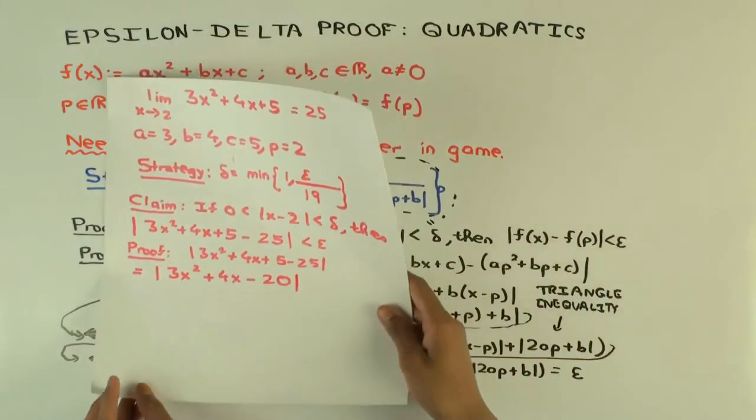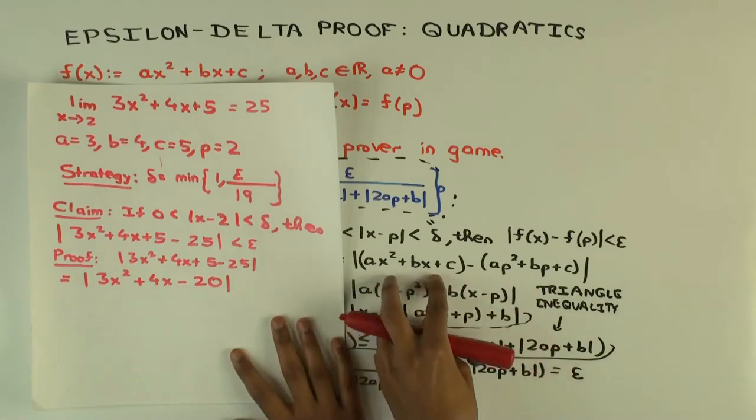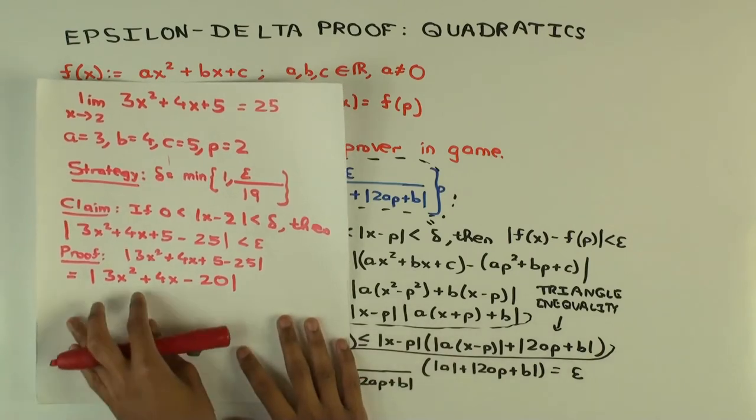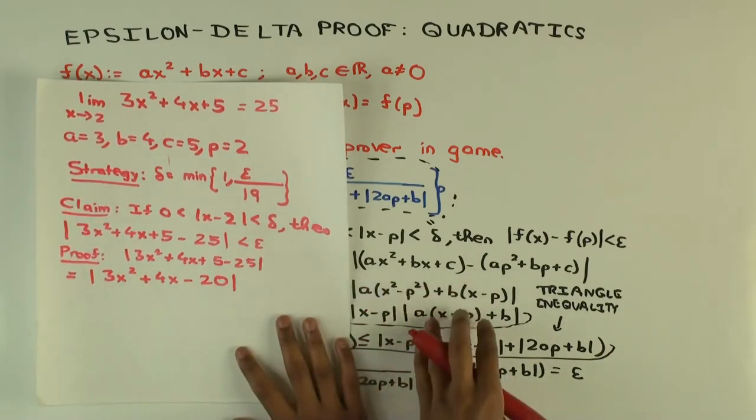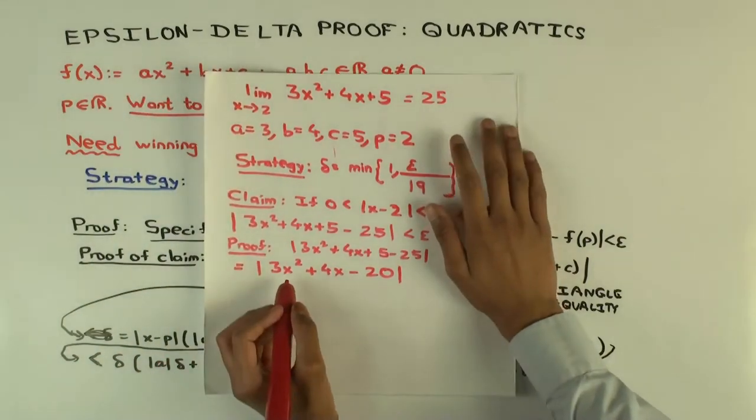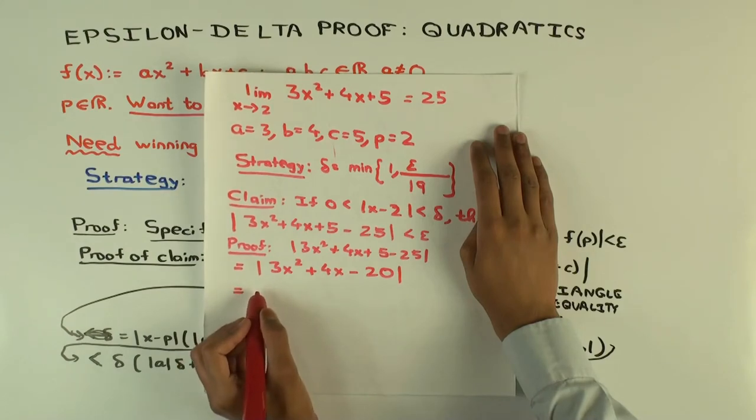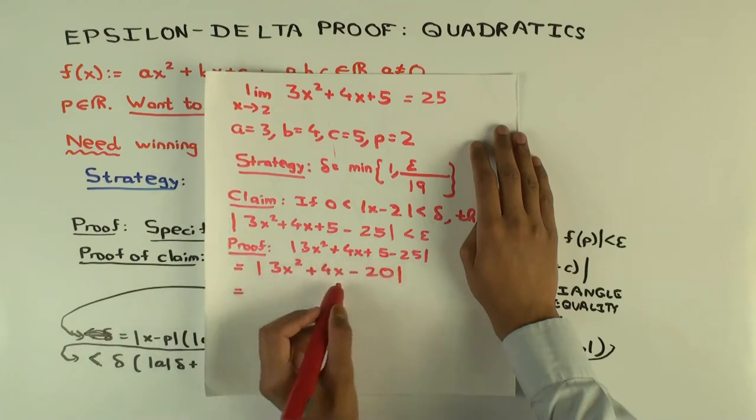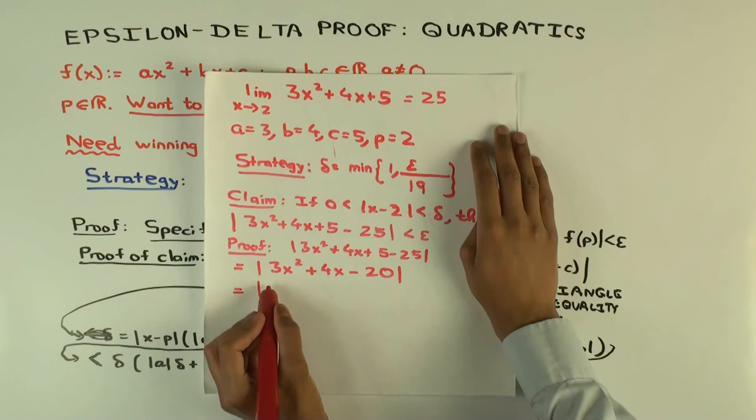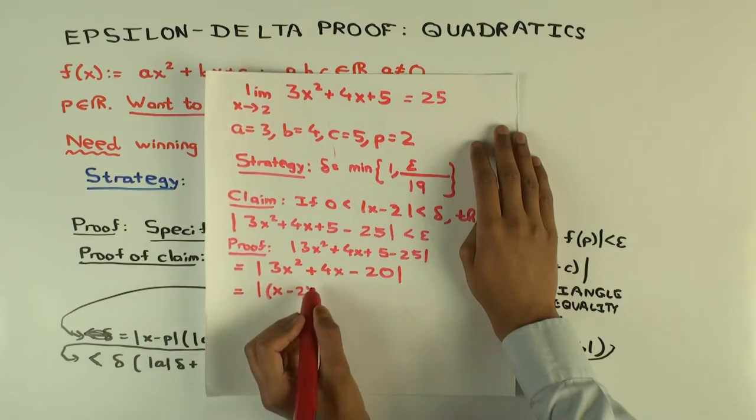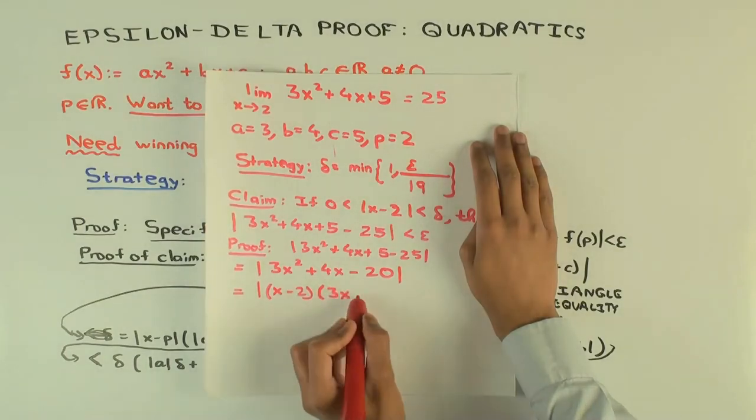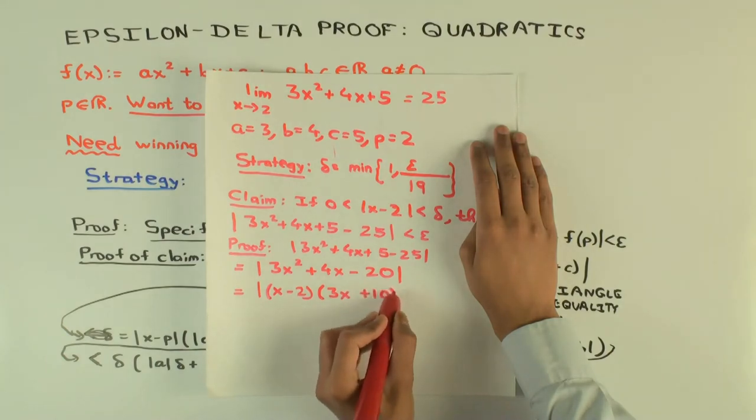Now if you look at the general proof, in some ways the general proof is easier, in some ways it's harder. Let's just try to do it assuming we didn't already see the general proof. The main thing you have to remember is that x minus 2 will always be one of the factors. So what should the factors be? x minus 2 times 3x plus 10.